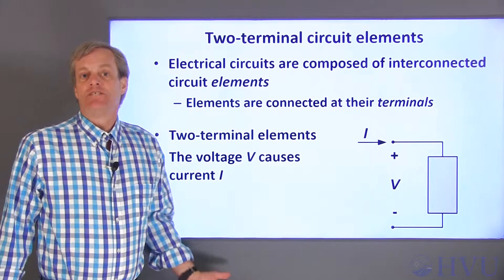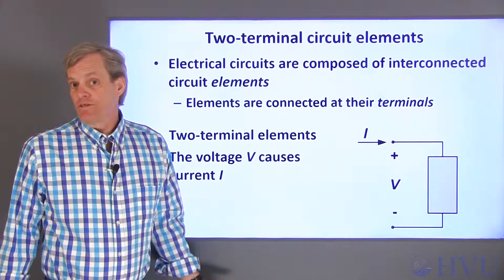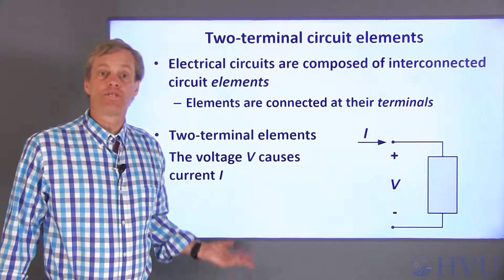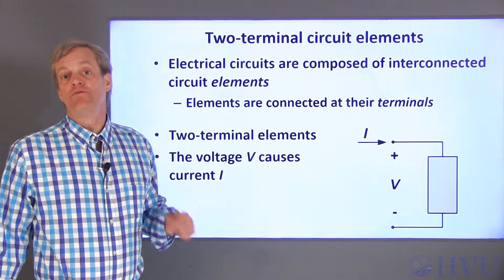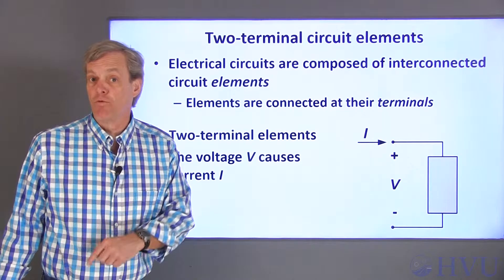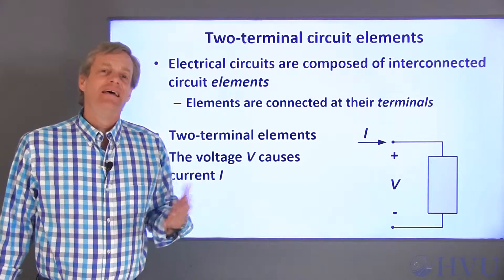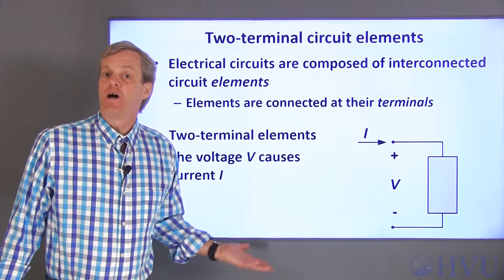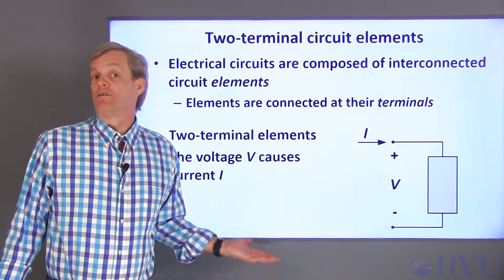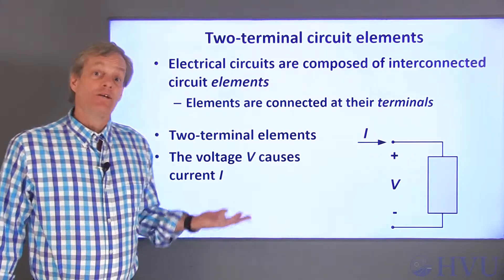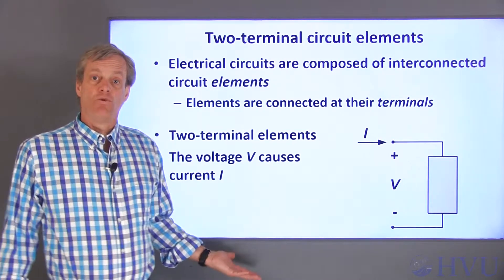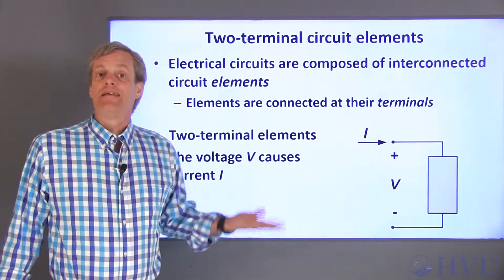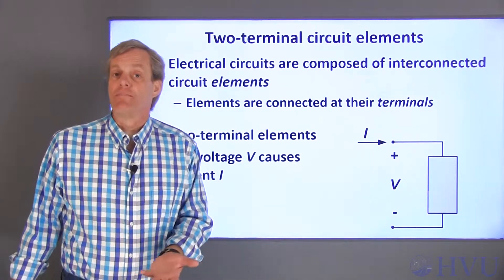Voltage is an energy level difference between the terminals. This gives an electromagnetic force which can be used to move charges from one terminal to the other. It can be useful to think of the voltage difference V as causing the current I. So if V changes, so will I, and the circuit element's properties relate these two parameters.